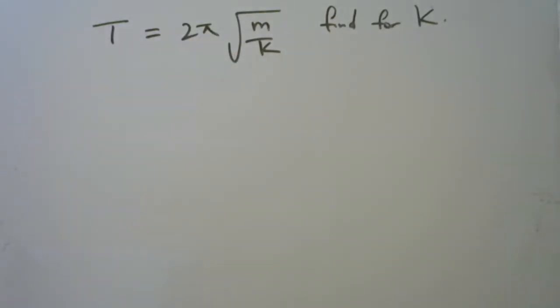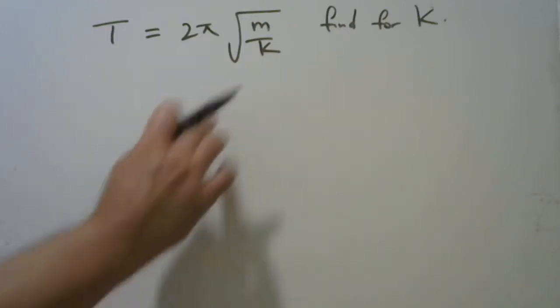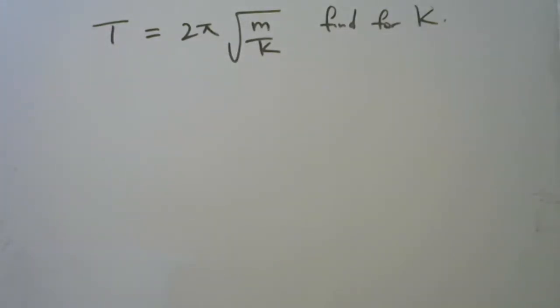Now, the first thing I want to do is to get rid of the square root. To get rid of the square root, you square.